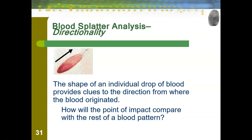We talked earlier about how we can determine a lot from these patterns, and one of those things was directionality. The shape of an individual drop of blood provides clues to the direction where the blood originated from. The point of impact is going to be the thickest part of the pattern, and then it gets thinner as it moves away from the source.